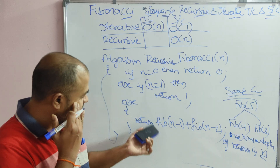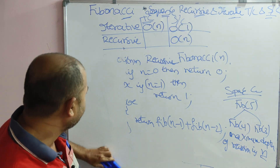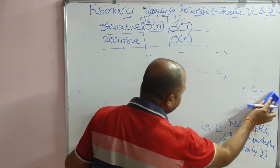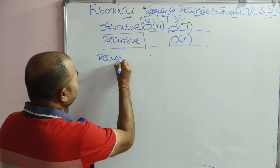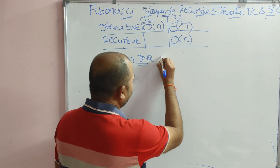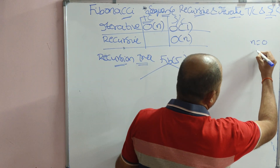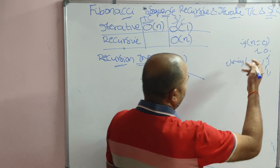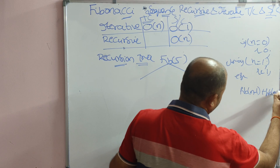Now let us analyze the time complexity. The formula is Fibonacci(n minus 1) plus Fibonacci(n minus 2). We calculate the time complexity by drawing the recursion tree. Let N equal 5. Fibonacci(5) — the first condition n equals 0 returns 0, and else if n equals 1 returns 1. Since both are false for 5, we compute return Fibonacci(n minus 1) plus Fibonacci(n minus 2), that is Fibonacci(4) plus Fibonacci(3).